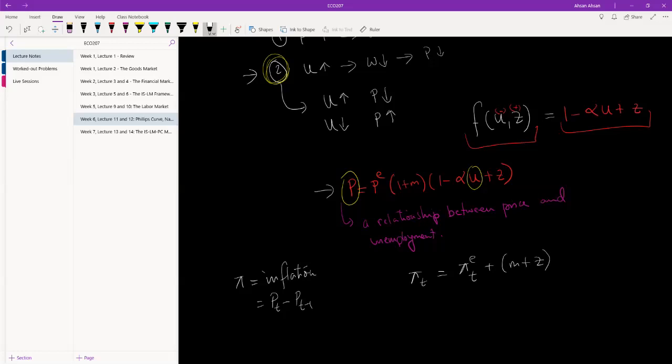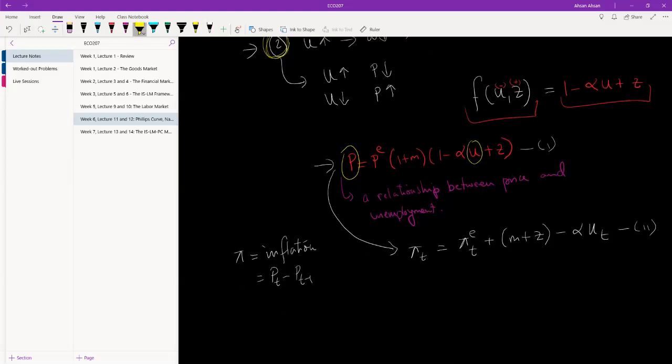From this function we can derive this: inflation in period t is equal to expected inflation in period t plus m plus z minus alpha unemployment in period t. Now the derivation from here to here is not difficult but it's time consuming, so I'm not going to be doing this during the video lecture and I'm not going to expect you guys to derive it during exams. But the derivation is given in the appendix of the chapter, so feel free to go through it and figure out how it is done. From this, let's call this equation 1. We can derive equation 2, which effectively tells us that inflation in period t depends on, negatively depends on, unemployment in period t.